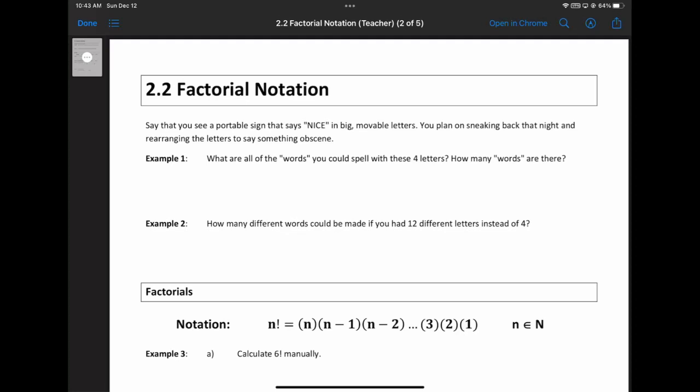Your brain is immediately going to go, how can I rearrange the letters in nice to make a bad word. I specifically chose nice because I don't think you can. We're going to rearrange the letters in nice to try and make as many different words as possible. The way to think about this, and this is going to be a common theme throughout the problem solving in this course is: if you want to know how many ways you could do something, picture doing the actual activity in your head.